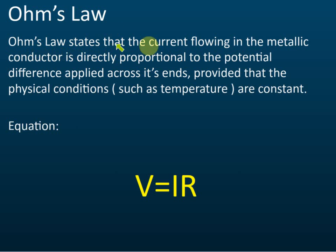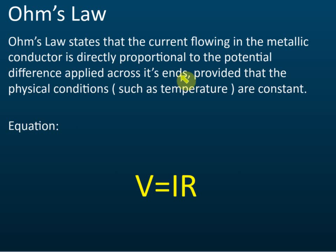Ohm's law says that the current flowing in a metallic conductor is directly proportional to the potential difference applied across its ends. So the current is directly proportional to the potential difference. But there is a requirement: the physical conditions such as temperature must be constant.